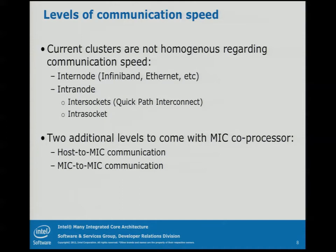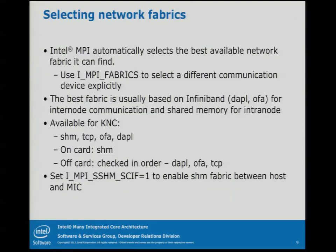Current clusters are not homogeneous with regards to speed — we all know that. You have internode issues with the network, and then intranode issues both between sockets and between cores in the processor. Now we've added the MIC, which sits across the PCIe bus, so you've got two additional types of communication to worry about: the host talking to the MIC, and the MIC talking directly to other MICs. How does the MPI library determine what interface to use to communicate across these networks?